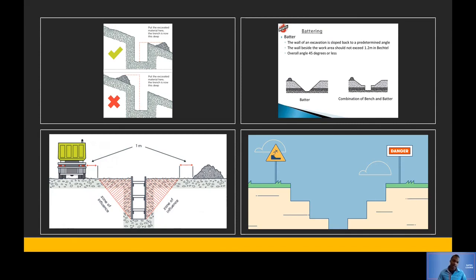This is a combination of bench and batter. The zone of influence — the area where you do not want to place excavated material or have trucks vibrating — is typically defined by an angle, perhaps around 60 degrees. Once you've reached the edge of that zone of influence, take another metre away just to be safe before placing material or allowing trucks to travel.